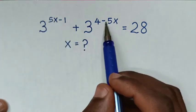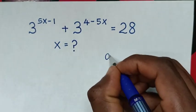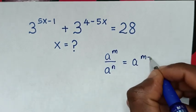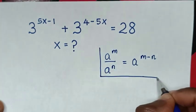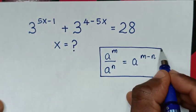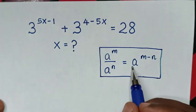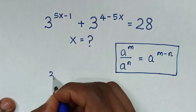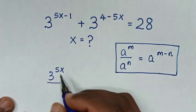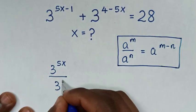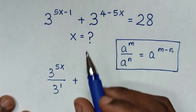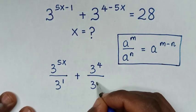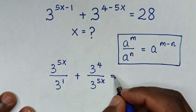From this part we will apply the quotient rule, which is a power m over a power n is equal to a power (m minus n). So we change into this form: it will be 3 power 5x over 3 power 1, plus 3 power 4 over 3 power 5x, is equal to 28.